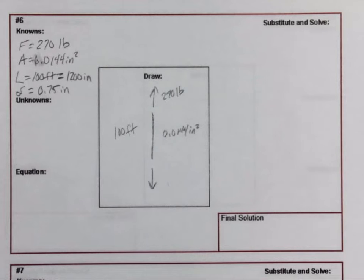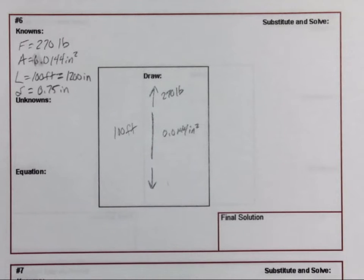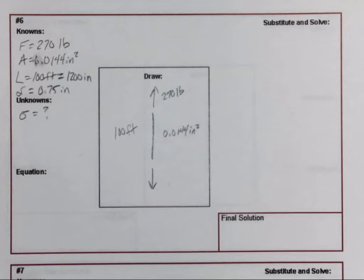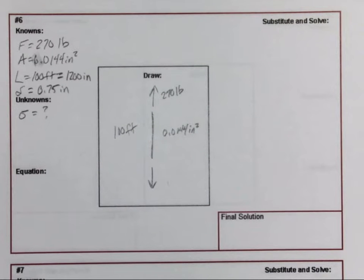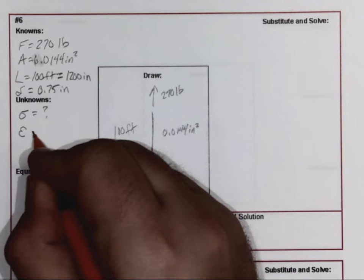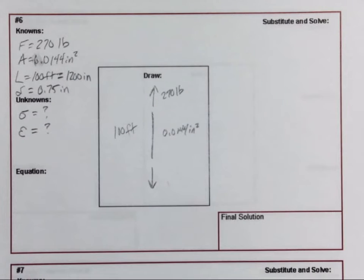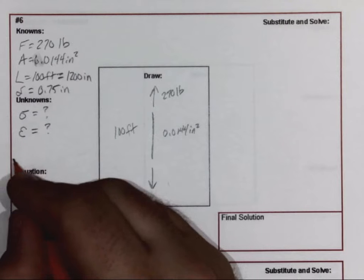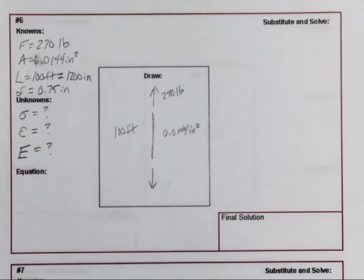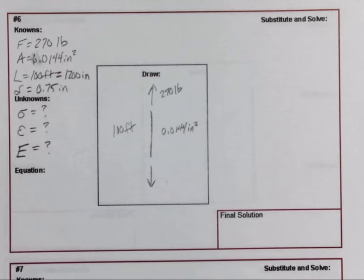But the unknowns that we need to know is they want to know what's the stress, they want to know what is the strain (epsilon, lowercase e in the Greek alphabet), and then they want to know what's the modulus of elasticity. The modulus of elasticity is a capital letter E, not in the Greek alphabet.